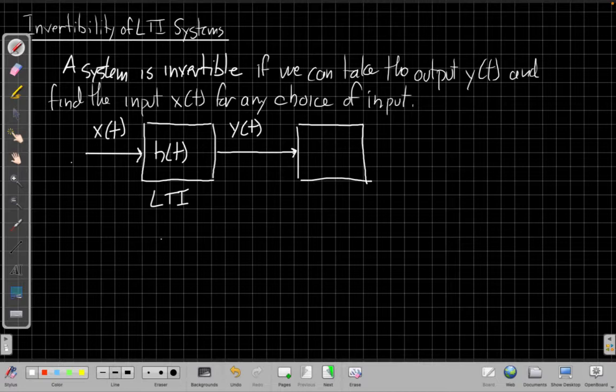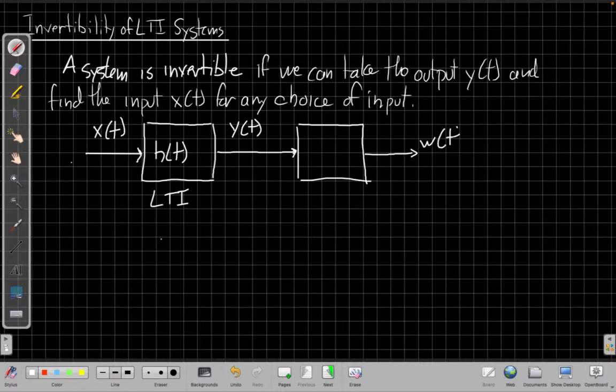that we put y(t) into, who has some new output, we'll call it say w(t), but we need that w(t) to be equal to the original x(t). And ideally, we'd like this new system to be LTI as well. So it has its own impulse response, g(t).